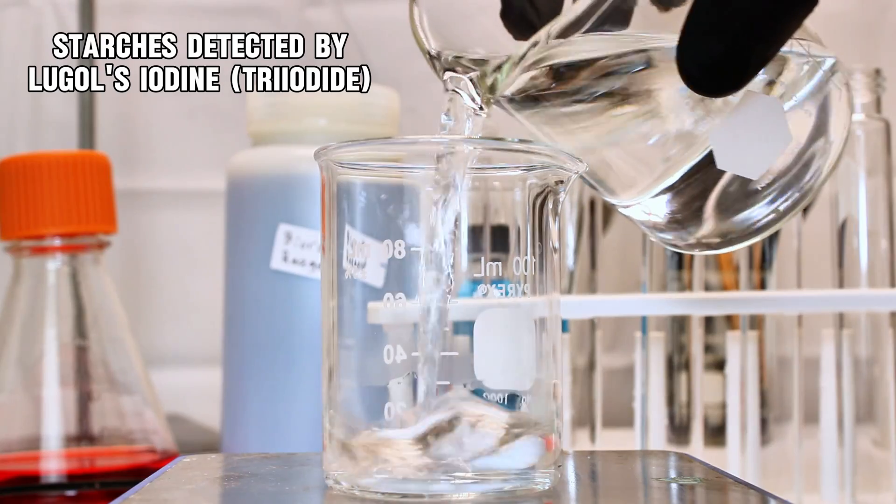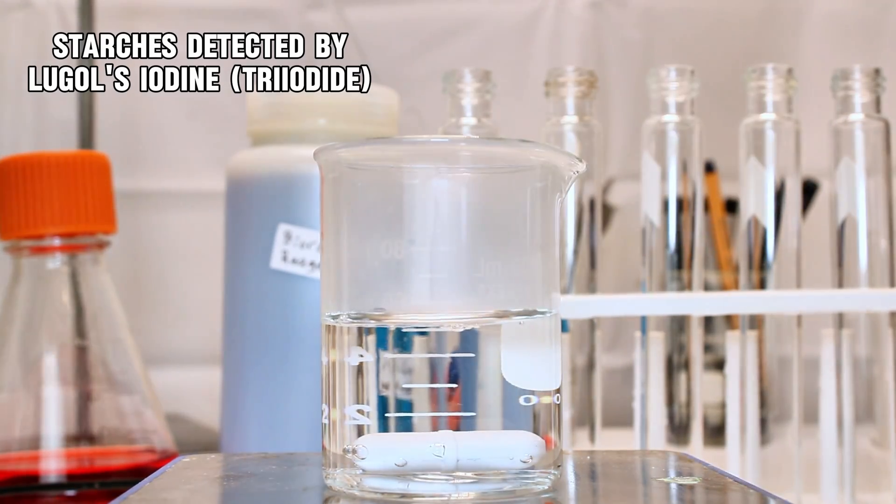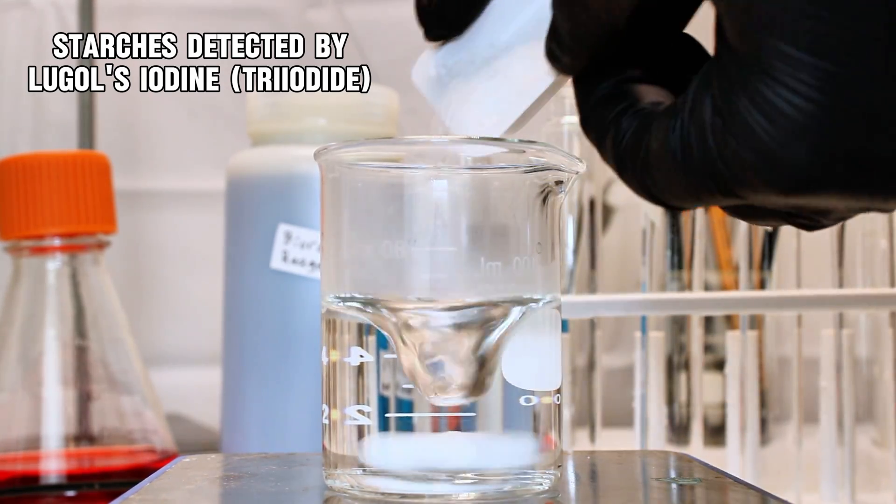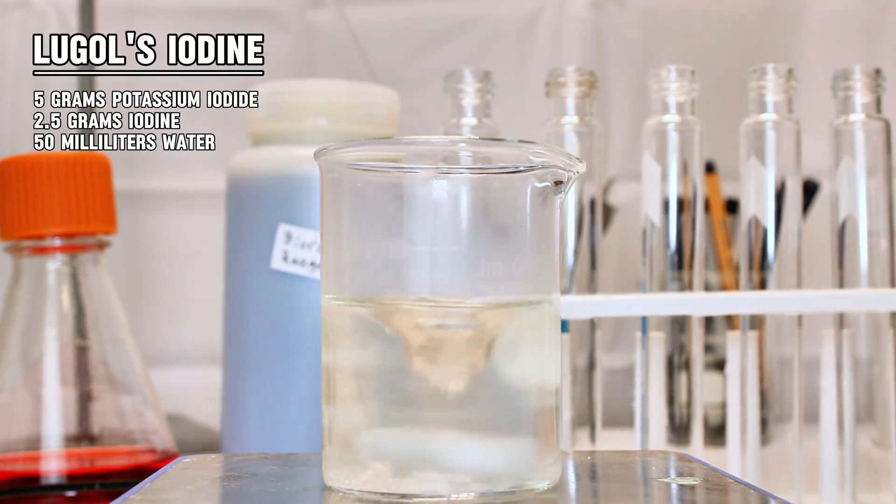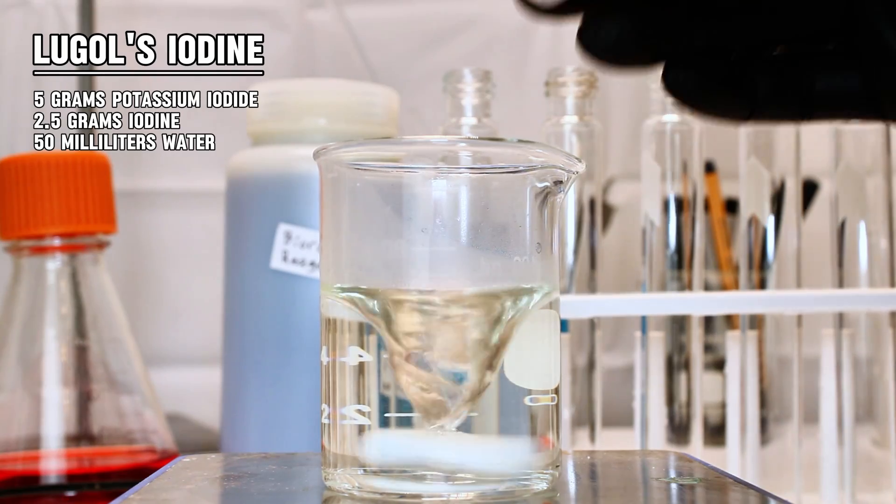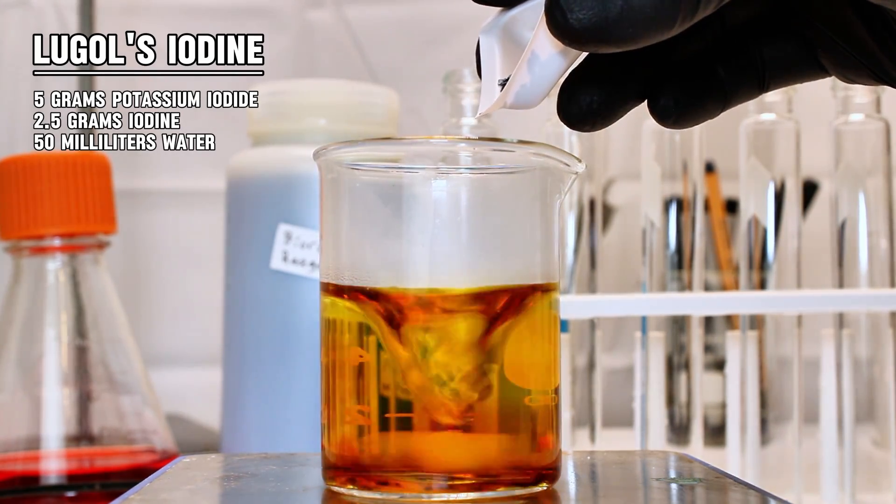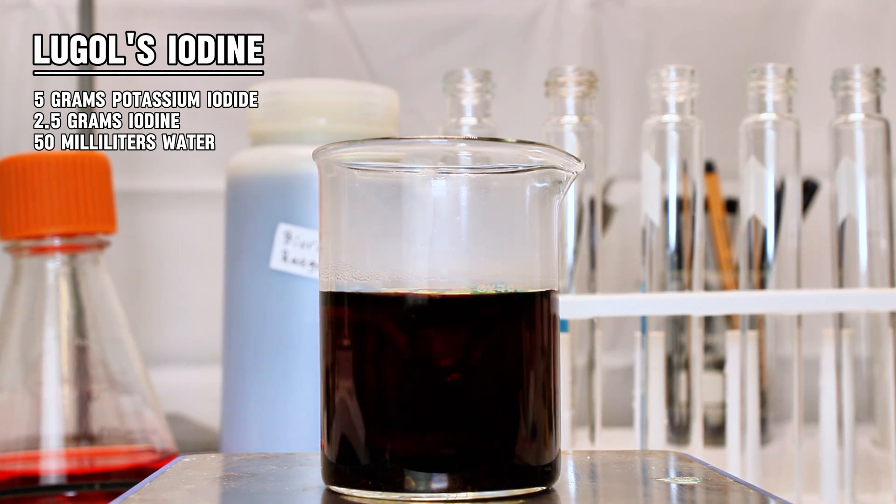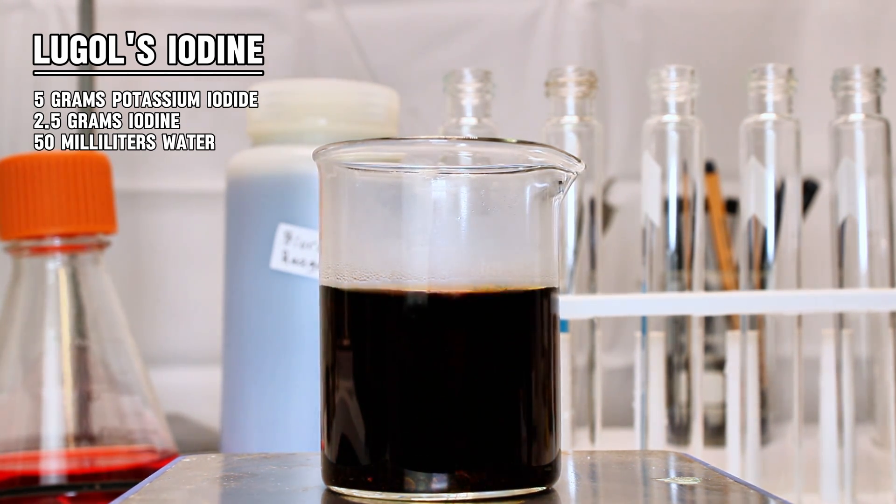For my second reagent, I need something that can test for the presence of starches, and by far the best is something called Lugol's iodine. To make this solution, I first dissolve 5 grams of potassium iodide in 50 milliliters of water. Once the potassium iodide had completely dissolved, I then added 2.5 grams of elemental iodine, and gently heated the solution until it all dissolved as well.